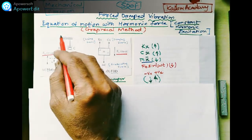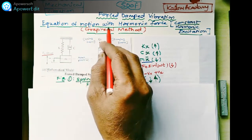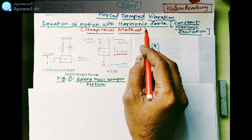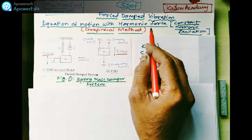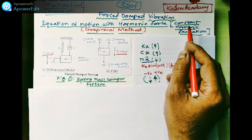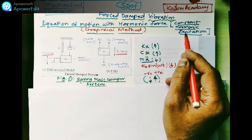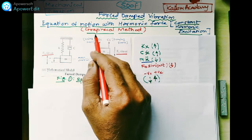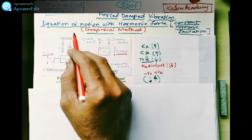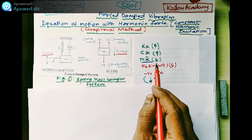This is the next video. We are going to continue with the equation of motion for force vibration with harmonic force — that means constant harmonic excitation. There are two methods: graphical method and numerical method for calculating the equation of motion for this harmonic force.